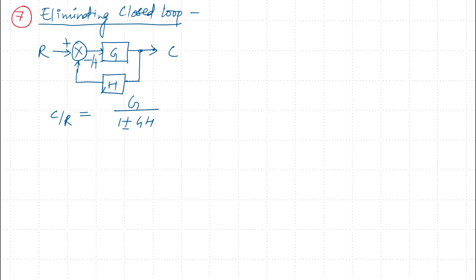This closed loop block can be represented by a single block with gain G divided by 1 plus or minus GH, with one input signal and one output signal. This is rule number 7: eliminating the closed loop system.